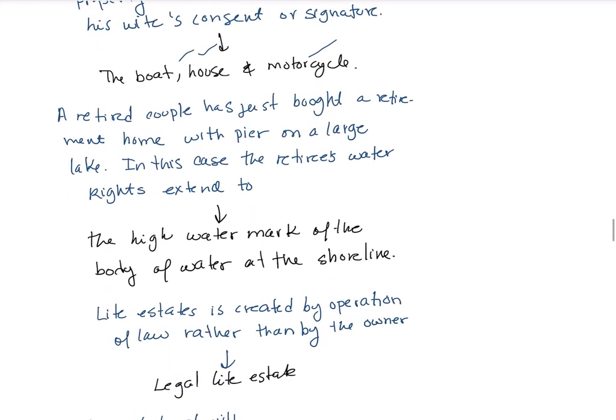A retired couple has bought a retirement home on a large lake. In this case, the retired couple's water rights extend to the high water mark of the body of water at the shoreline — these are riparian or littoral rights.